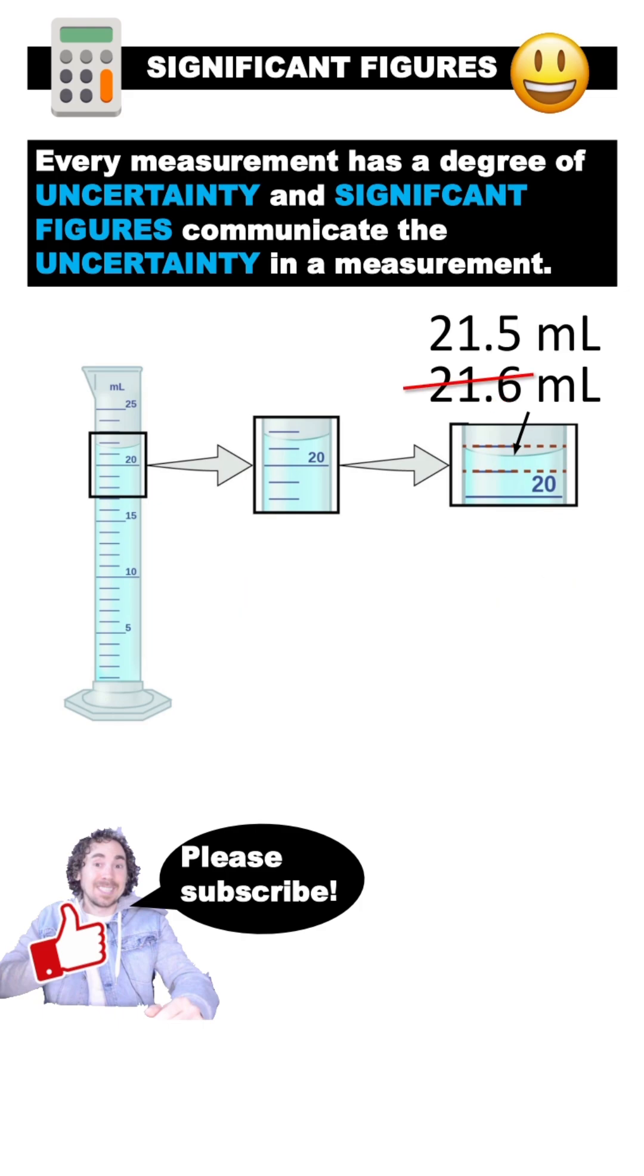So one person may read this volume as 21.6, while another might rate it as 21.5. Either way, the number is written to communicate the level of precision of the instrument. This graduated cylinder can only be read to one decimal place. You can't add an extra zero because this instrument can't be read with that level of precision.